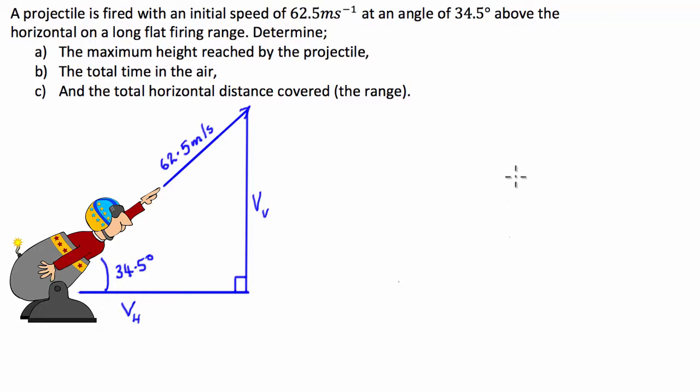G'day guys, I've got a projectile motion question for you today where we've got a projectile that's fired along a long flat firing range with a speed of 62.5 at an angle of 34.5 degrees above the horizontal and we're asked to find three different things.